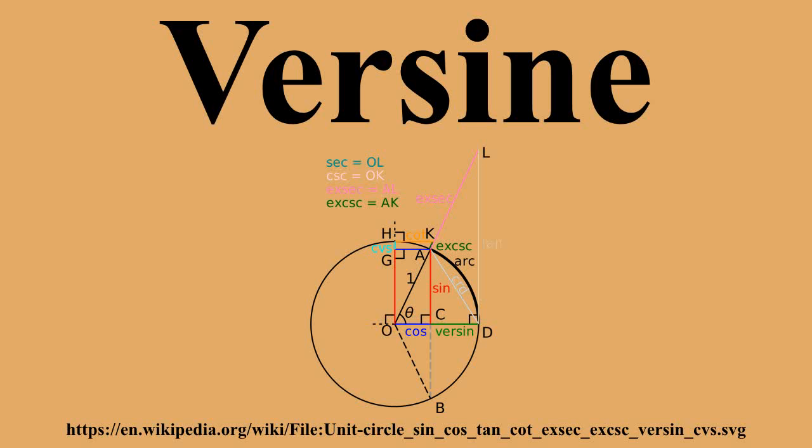If the arc ADB of the double angle delta equals 2 theta is viewed as a bow and the chord AB as its string, then the versine CD is clearly the arrow shaft.